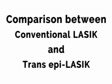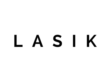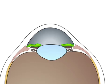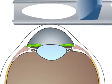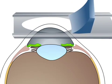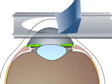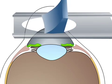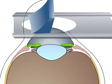Let us do a comparison to understand the difference between conventional LASIK and transepi LASIK. LASIK, also known as the flap and zap method, requires the surgeon to cut across your cornea to create a flap with either a laser or a blade.